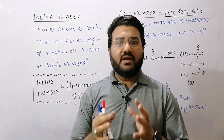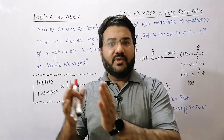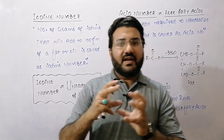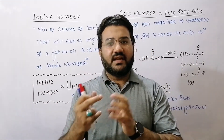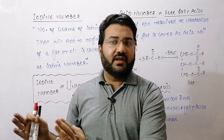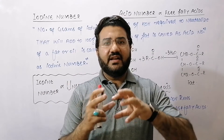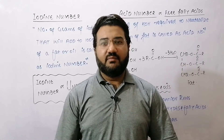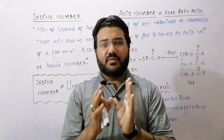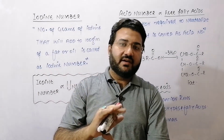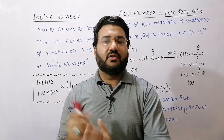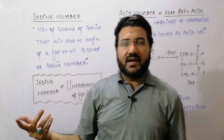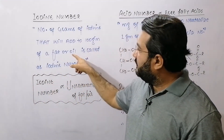If the fat or oil is unsaturated, then iodine will be added at the double bonds. If a fat or oil has many double bonds, then it will add many grams of iodine. But if a fat or oil has a very limited number of double bonds, then very few grams of iodine will be added, because the addition reaction takes place at the double bonds. So iodine number is basically how many grams of iodine will be added into 100 grams of fat or oil.